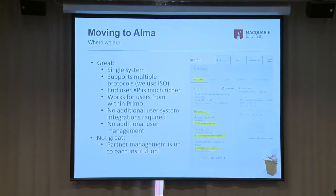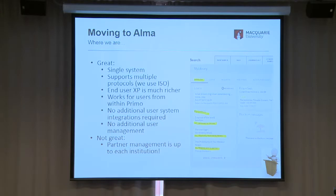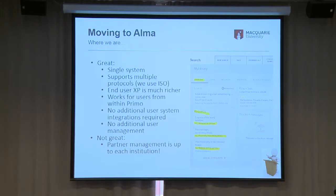So we had a look at moving to Alma. Alma is great because it's a single system — it supports multiple protocols for communicating between your partners, and the end user experience is much nicer. No longer does a student have to log into an external system to look at the status of their interlibrary service requests; they can look straight up on Primo. There's a section on Primo which shows you the status of your request. From our perspective, there's no additional user integration required because it's all in Primo, all in Alma, and no additional user management either.